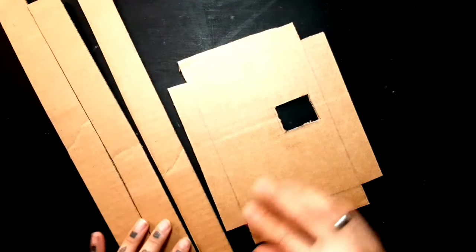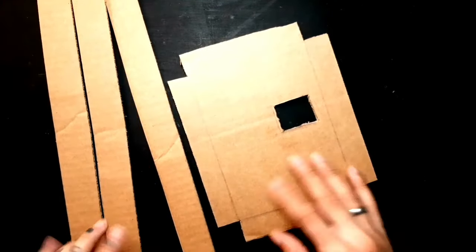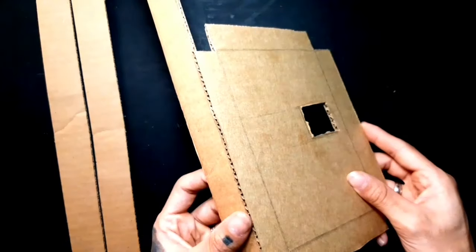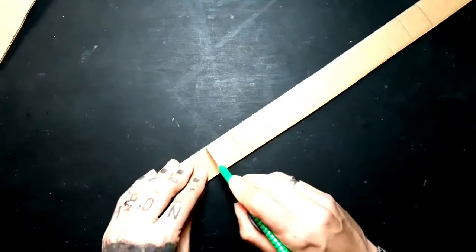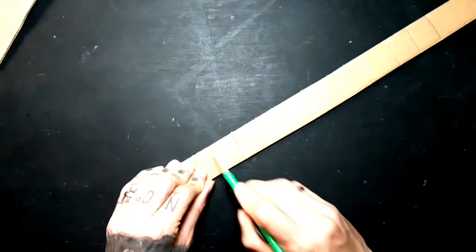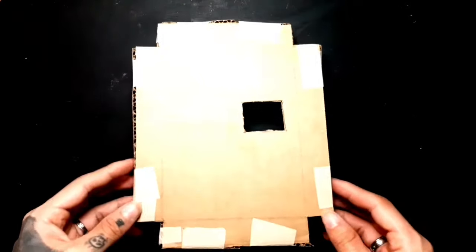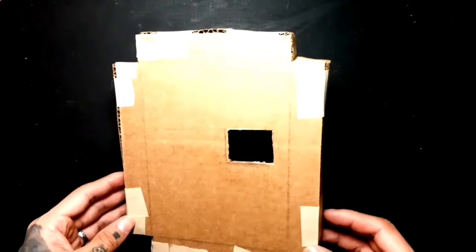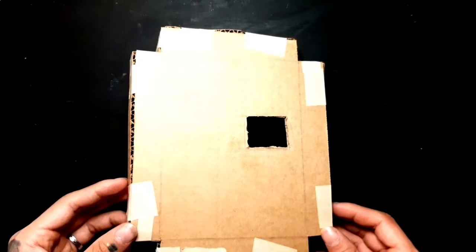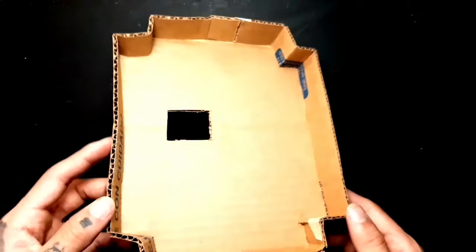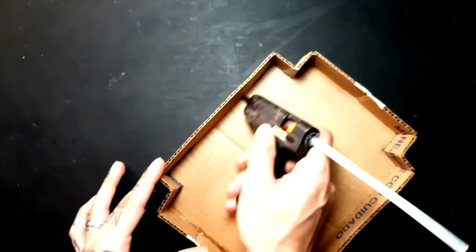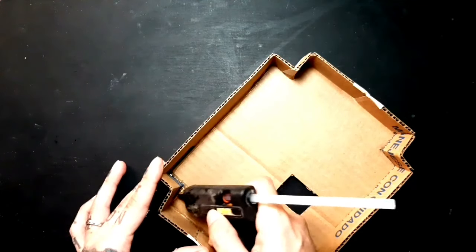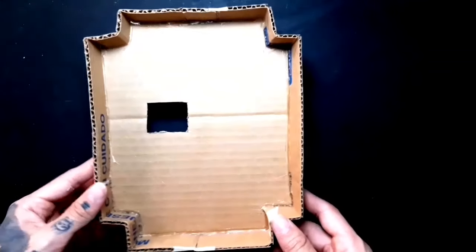Next we'll cut strips approximately one inch more or less to reinforce the contour of the mask. On the cardboard strips we'll mark the folds of the mask as we can see in the video images. Once we've properly marked all the folds, we'll glue the cardboard strips around the mask, first with masking tape and then with hot silicone.